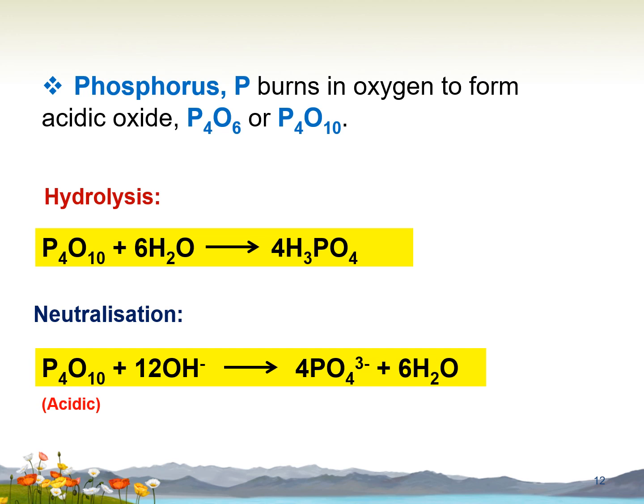Phosphorus burns in oxygen to form two types of oxide: phosphorus trioxide P₄O₆ and phosphorus pentoxide P₄O₁₀. The hydrolysis of phosphorus pentoxide P₄O₁₀ with water produces H₃PO₄, which is called phosphoric acid. The neutralization of phosphorus pentoxide with OH⁻ produces PO₄³⁻ phosphate ion and water.